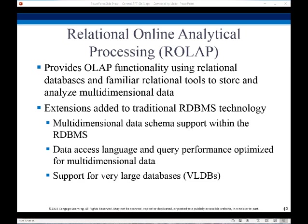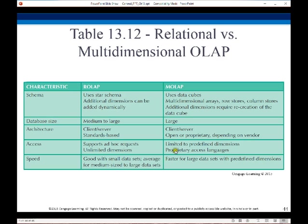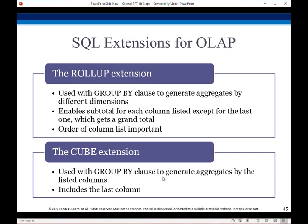In data warehousing, the sources often store only current data, not historical data, so we need to keep time as a dimension in what we're doing. Corporate decision making requires a unified view of all organizational data including historical data, and our warehouse becomes this repository or archive of information gathered from multiple sources. There are advantages and disadvantages to ROLAP versus MOLAP, and that informs why you might want to use one or the other.